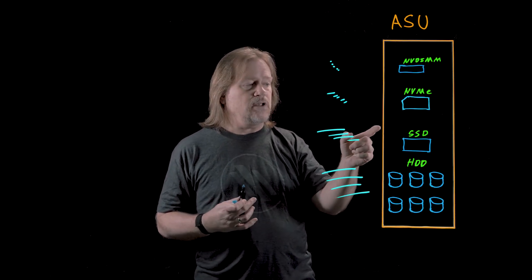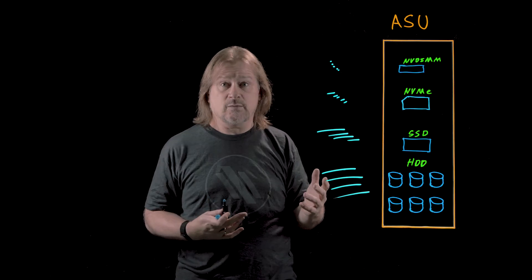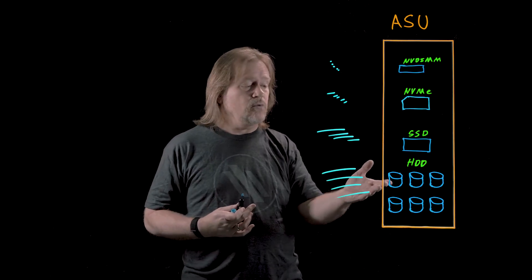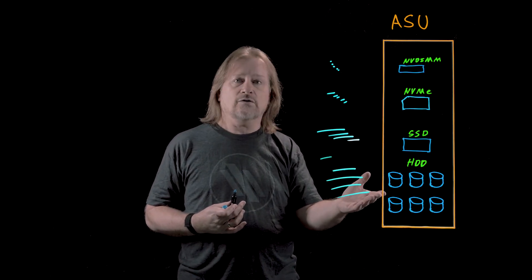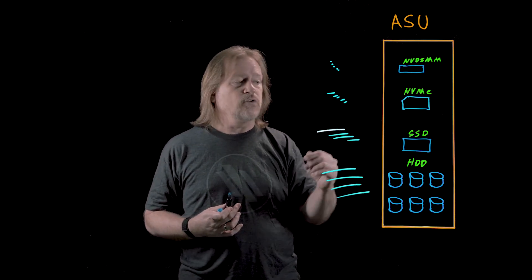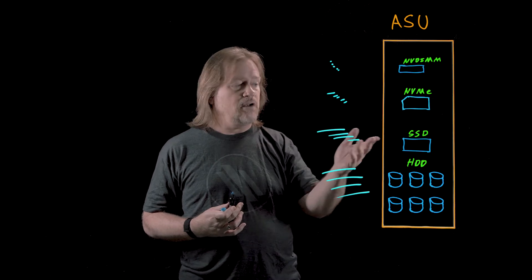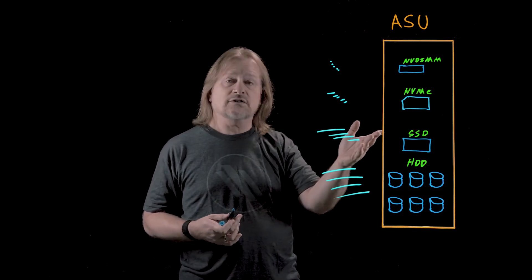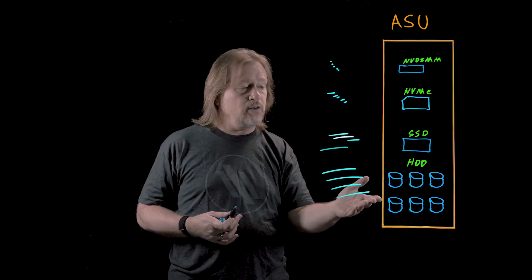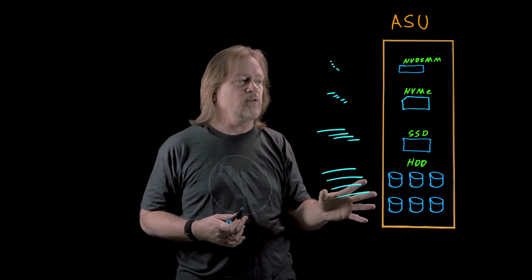If the flash is underutilized — less than about 80% full — we'll take the smallest things from the hard drive and move them up to the flash. If the flash is overutilized, above 80%, we'll take the largest things from there and move them down to the hard drive. That keeps those two groups in balance.